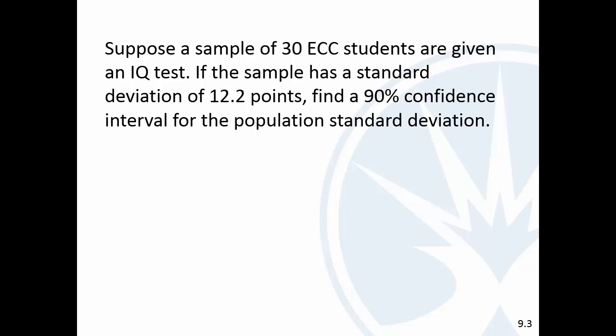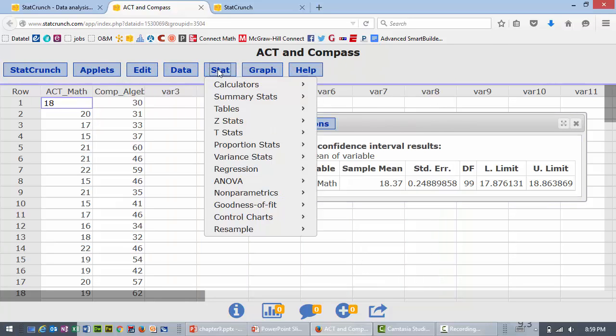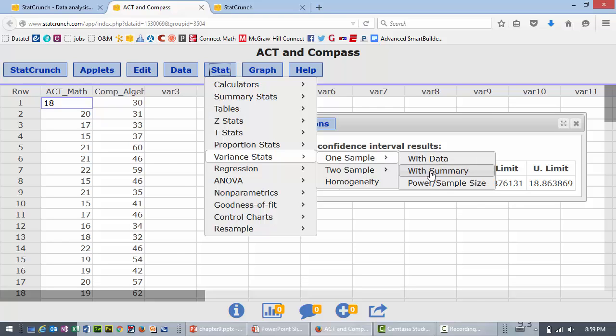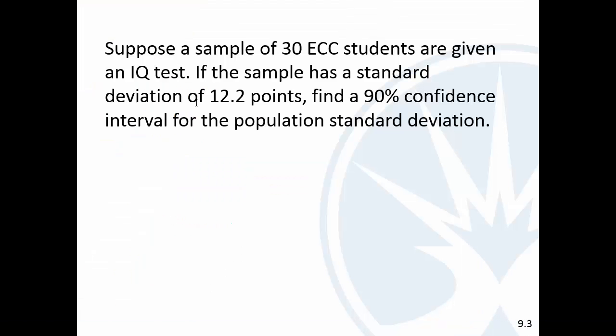We're going to go to Stat, Variance Stats, One Sample with Summary. Sample variance—now there's a problem here. We were just given the standard deviation, that's 12.2, so the variance is going to be 148.84. We've got to square it.